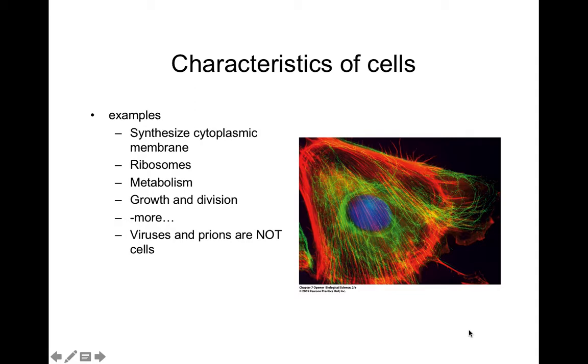So these are just some of the characteristics of cells. We've talked about how all cells can synthesize a cytoplasmic membrane, also known as a cell membrane or plasma membrane. All cells have ribosomes, where protein synthesis occurs. Cells carry out metabolism, both anabolism, biosynthesis, and catabolism. Cells grow and divide. These are just some of the characteristics of cells.